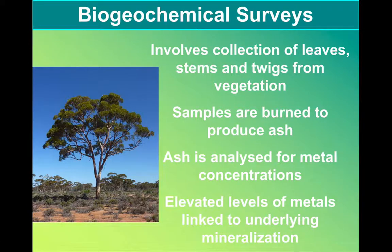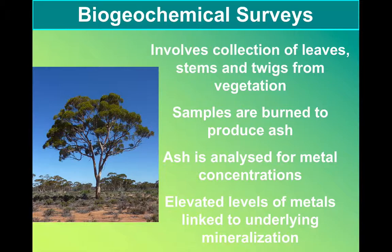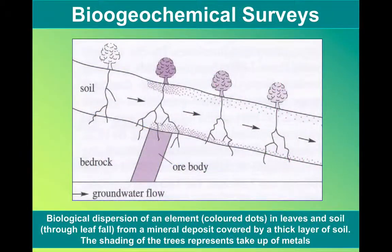Our final technique is a biogeochemical survey. This is where vegetation is sampled, looking again for anomalous concentration of minerals that may be drawn up, particularly into trees, from the soil and the bedrock beneath. If we get high levels of metal, it can indicate we've got an ore body beneath the tree. It's particularly useful, for example, in places like Australia, where eucalyptus trees will draw water and dissolved minerals from depth beneath the soil and bring them to the surface for us to sample. Even gold has been found this way. This diagram shows how, again, by following the concentrations back towards their highest point, we can find the location of the ore body.